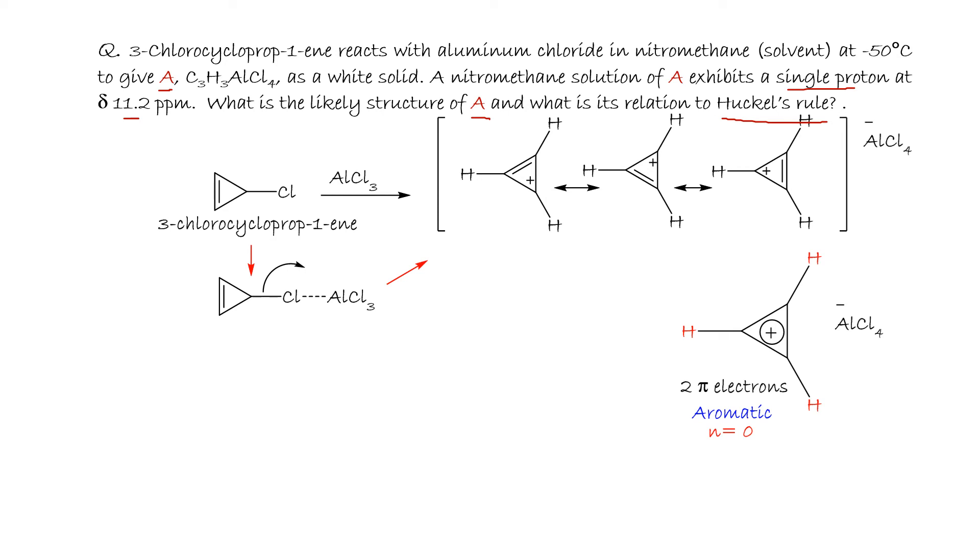Well, this compound 3-chlorocycloprop-1-ene first reacts with aluminum chloride in a Lewis base-Lewis acid reaction to form this complex. Then this is cleaved to give a carbocation and AlCl₄⁻. The carbocation delocalizes over the three carbons.